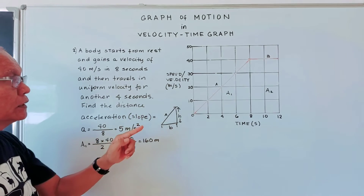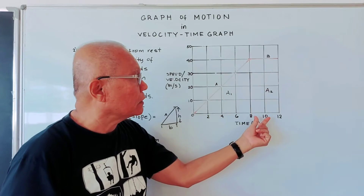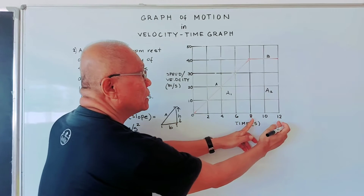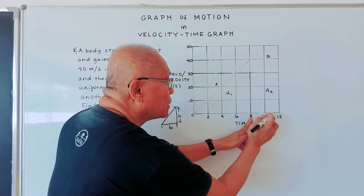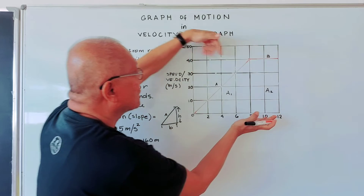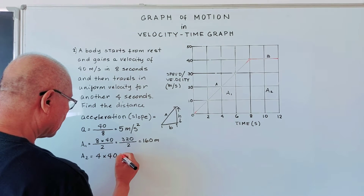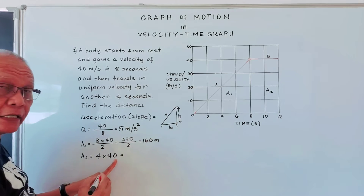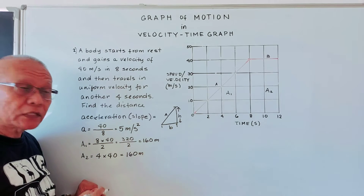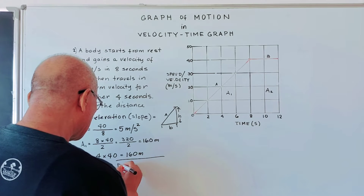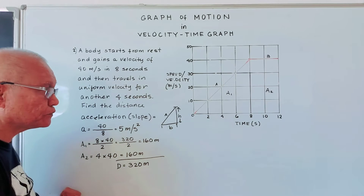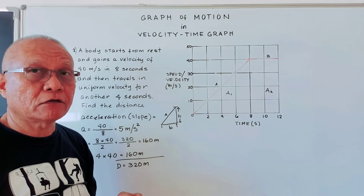Area two is the rectangle: base is 12 minus 8 which is 4, times height 40. So 4 times 40 is also 160 meters. The total distance is 160 plus 160 equals 320 meters. Now let us verify using the trapezoid formula.